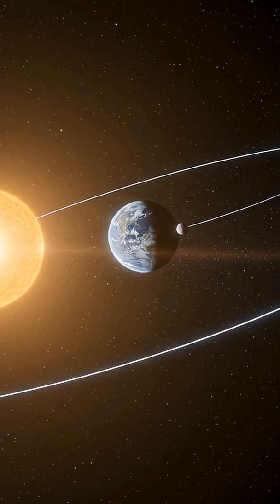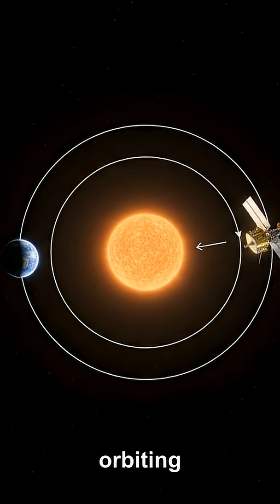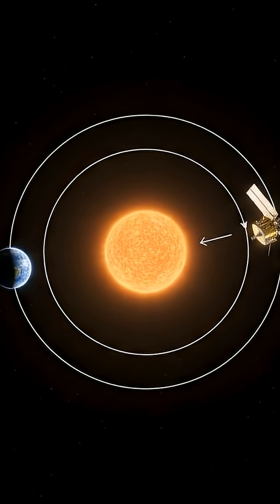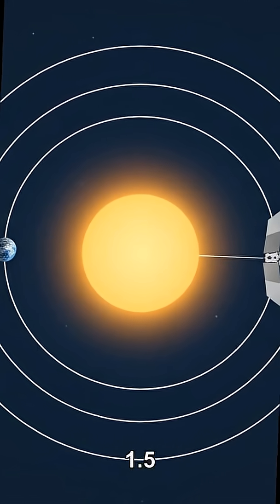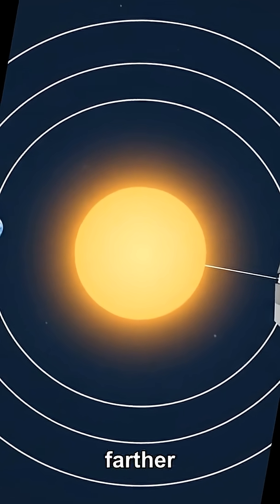The answer is that Webb isn't orbiting nothing—it's orbiting the Sun with Earth, and Earth's gravity tweaks the motion. L2 sits about 1.5 million kilometers beyond Earth, so Webb is about one percent farther from the Sun than we are.